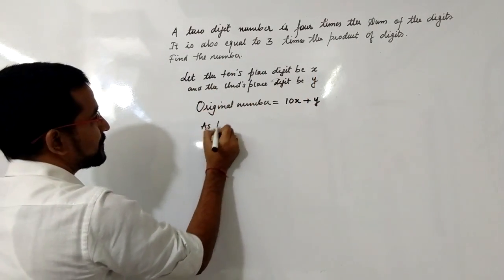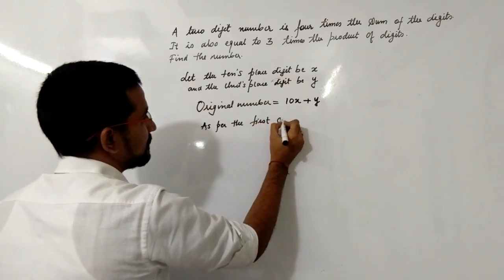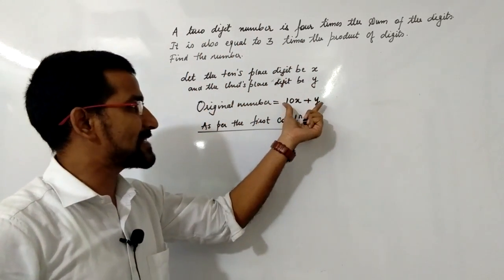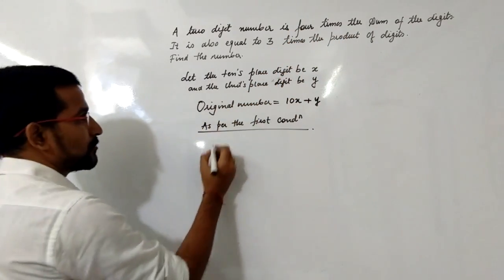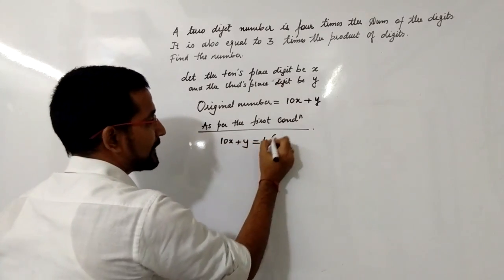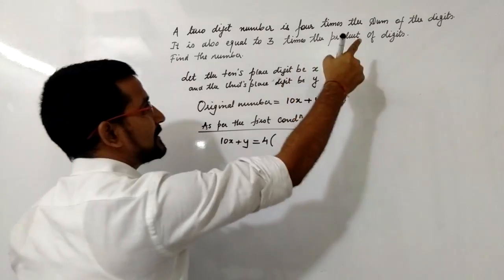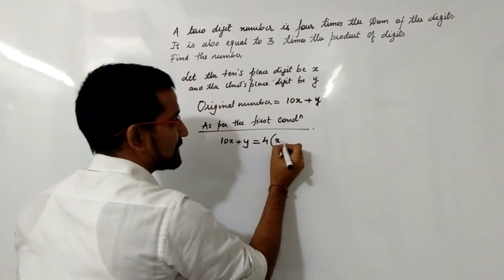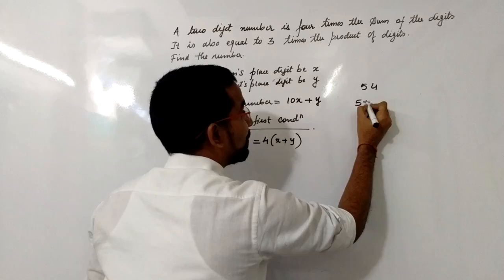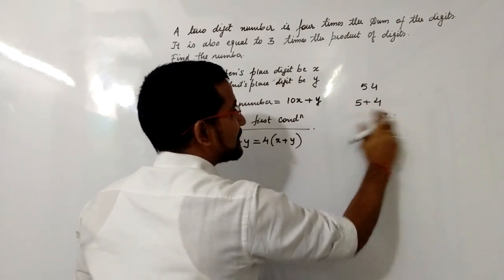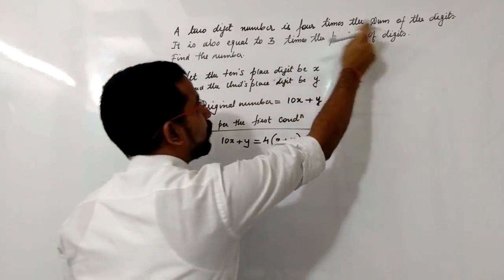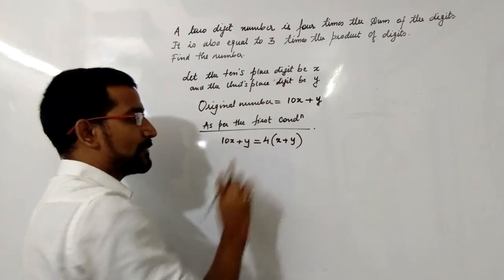As per the first condition, the two-digit number 10x + y is 4 times the sum of its digits. The digits are x and y, so the sum of digits is x + y. For example, with 54, the sum of digits is 5 + 4, not 5×10 + 4. So the equation is: 10x + y = 4(x + y).